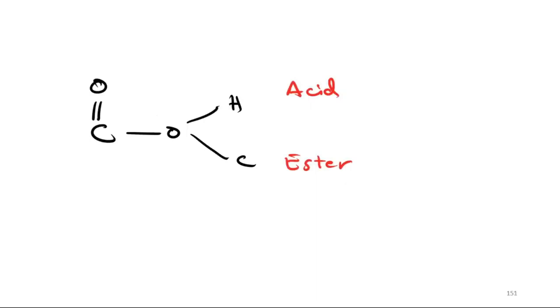Now, let's talk further about this. If you use C double bond O, H, then it will become acid. And if you use C, then it will become ester.